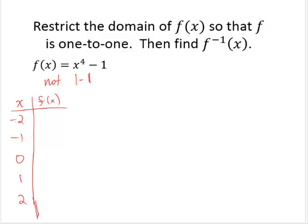OK, then my outputs: negative 2 to the fourth is 16, 16 minus 1 is 15. Negative 1 to the fourth is 1 minus 1 is 0. 0 to the fourth is 0 minus 1 is negative 1. 1 to the fourth is 1 minus 1 is 0. And 2 to the fourth is 16 minus 1 is 15.